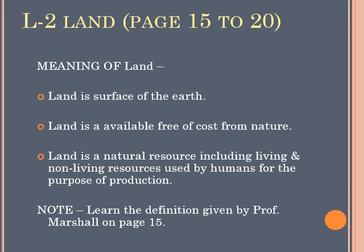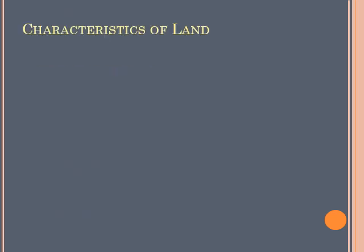Let's move on to the characteristics of land. Our first characteristic is that land is a free gift of nature. We haven't paid to live on this land — it is freely given to us. Land is not an outcome of our efforts; we have not done any labor to get this land. It is freely given to us by nature.